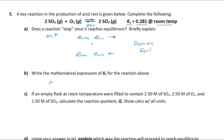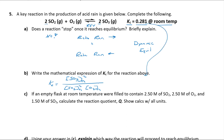The Kc expression is the ratio of molar concentrations of products over reactants at equilibrium, with each raised to its stoichiometric coefficient. For this reaction: Kc = [SO₃]² / ([SO₂]² × [O₂]), all at equilibrium. The coefficient of 2 on SO₂ gives the squared term; oxygen has a coefficient of 1 so it's just [O₂]. The value given is 0.281.